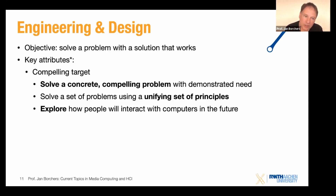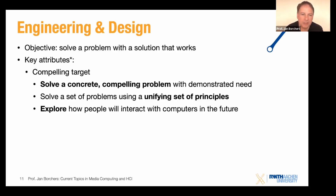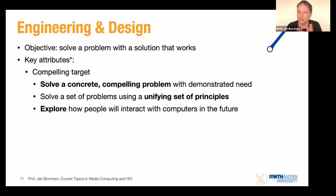A second compelling approach is showing that you can solve a whole set of problems with a new unifying set of principles. One example is the Springlets — shape memory alloy based actuators we built here at the lab — which showed we could build a whole variety of different physical actuators creating haptic input on the skin of different kinds, all with one very simple mechanical setup. That's a unification argument.